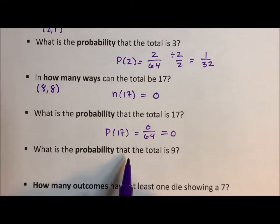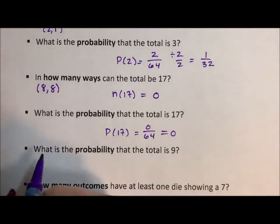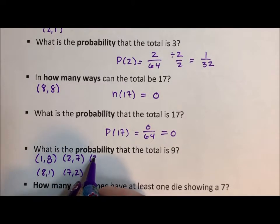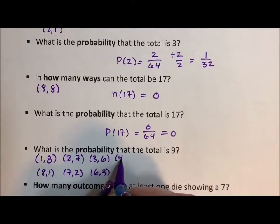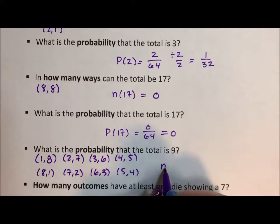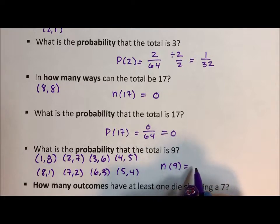What is the probability that the total is 9? This is similar to what we did with 10. We can do 1 and 8, 8 and 1, 2 and 7, 7 and 2, 3 and 6, 6 and 3, 4 and 5, 5 and 4. So there are 8 ways to roll a 9 on two 8-sided dice.